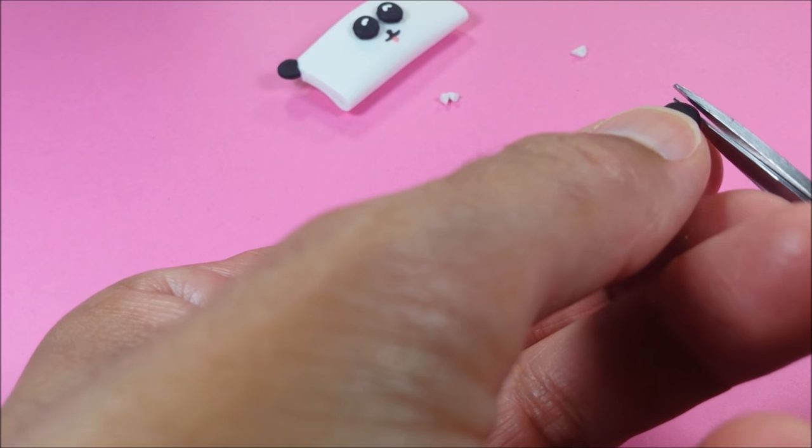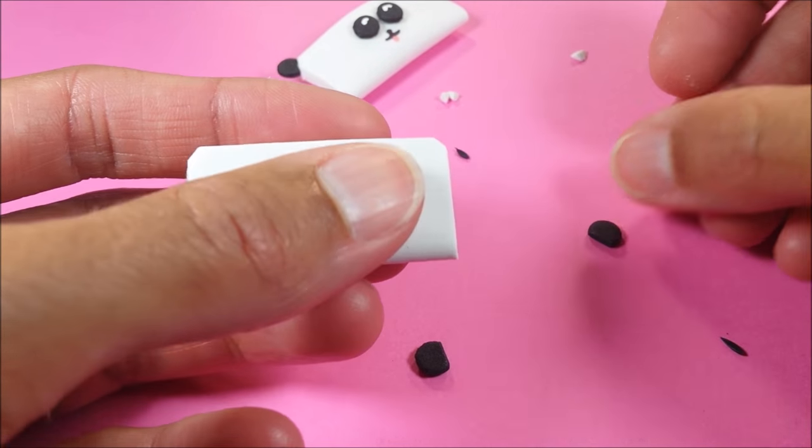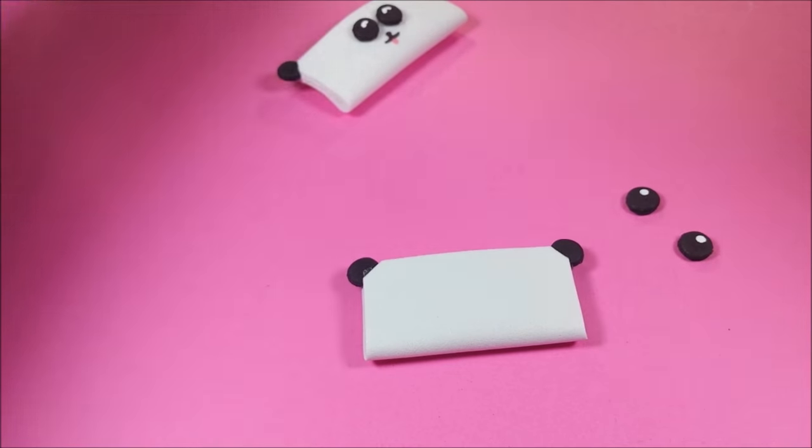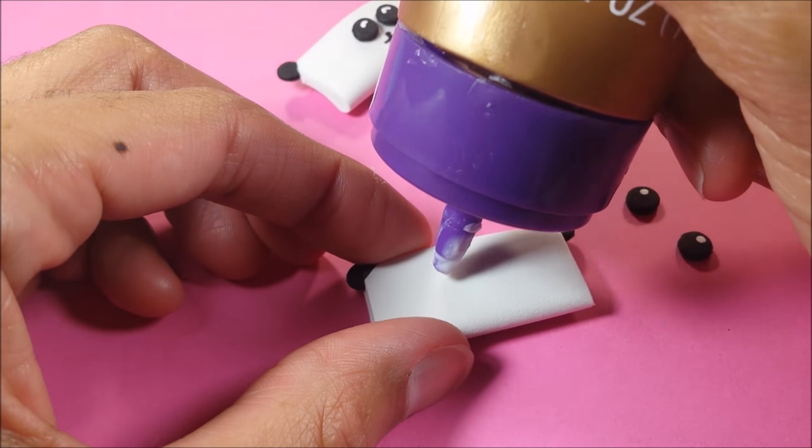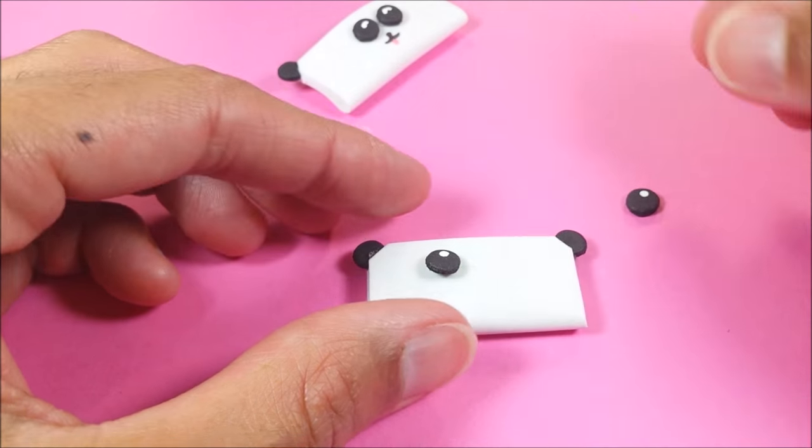Now I can glue my eyes. I have here some eyes I did earlier so they're already dry. I'm just using tacky glue. You can of course use your hot glue if you like.